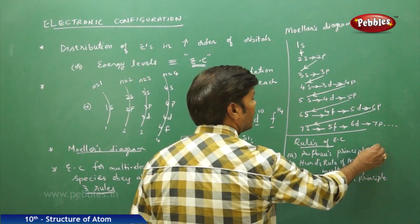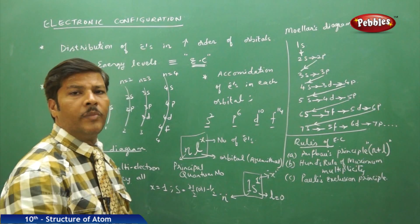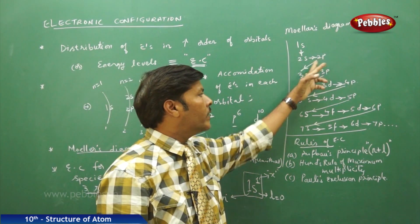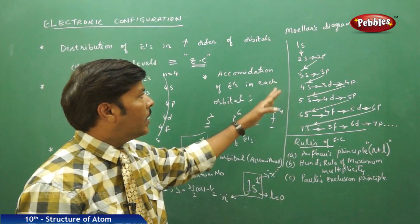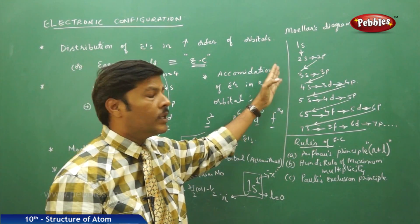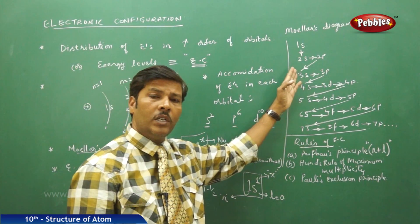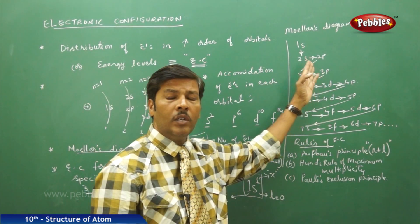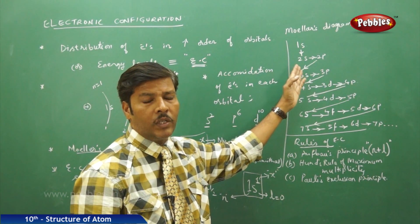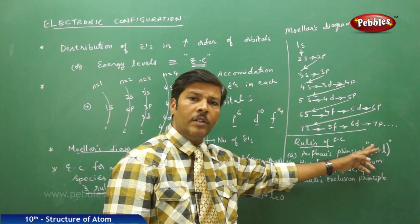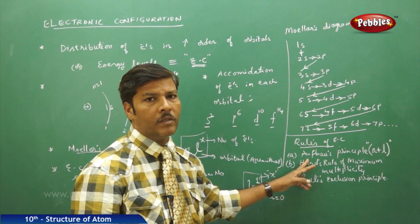The Aufbau principle involves the n plus l rule. When electrons are distributed into various orbitals, they should first enter the lowest energy orbitals before filling higher energy orbitals. This is governed by n plus l, where n is the principal quantum number and l is the azimuthal quantum number.